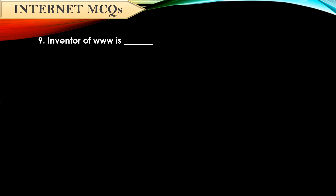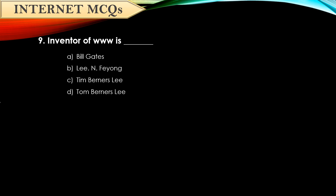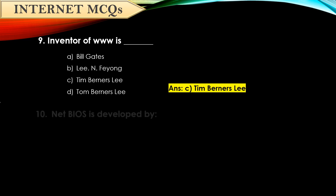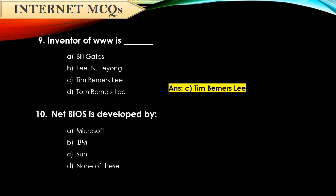Question number nine: Inventor of WWW is — the answer is Tim Berners-Lee. Question number ten: NetBIOS is developed by — it is developed by IBM.